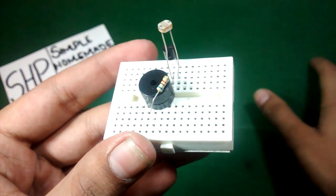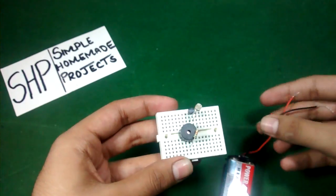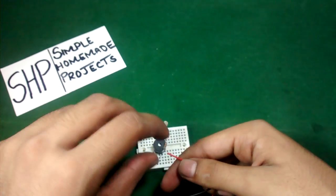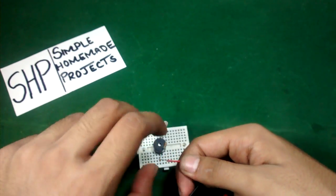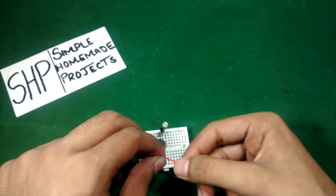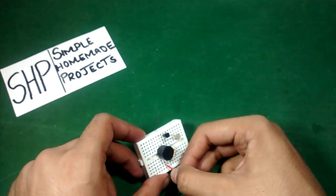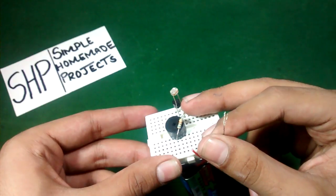Now you have to connect the positive terminal of the battery to the positive terminal of the buzzer, and negative terminal to the right pin of the transistor.